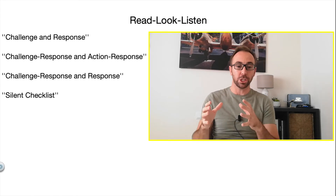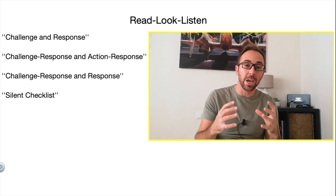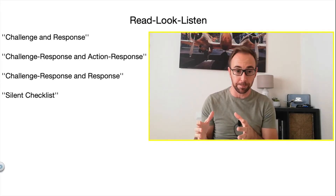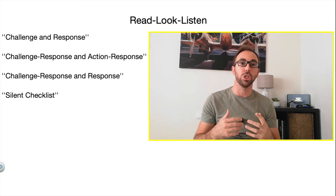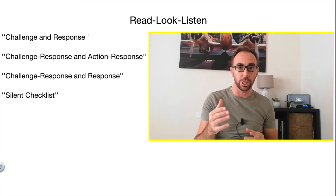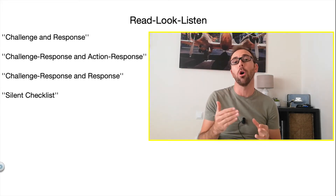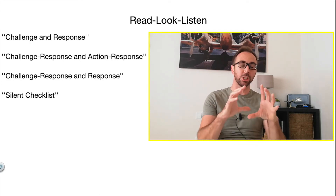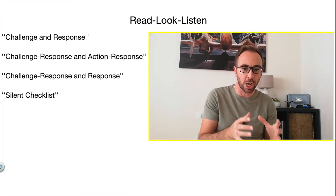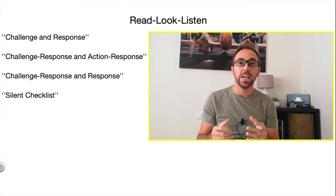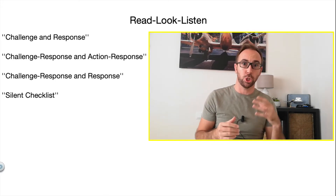Then we've got the challenge-response-and-response checklist. This is another way of accomplishing a checklist. The challenge is made by the pilot monitoring, and the response — after cross-checking and confirming the switch is in the correct position — is made by the pilot flying. For example, with the generator: challenge 'generator on,' the pilot flying looks at the generator and says 'on,' depending on the position of the switch. This checklist is used in a normal but busy situation — for example, one pilot is flying while the other prepares the aircraft, does the challenge and response, and both look at the switch before the pilot flying answers.